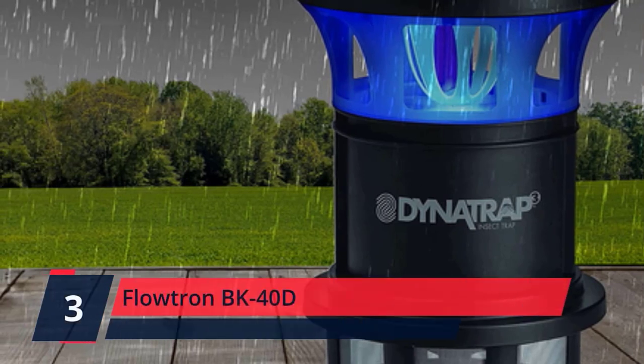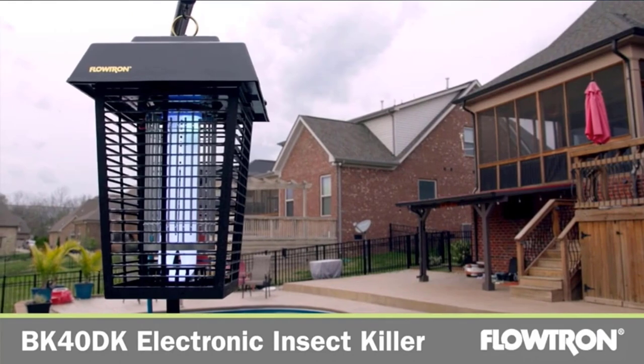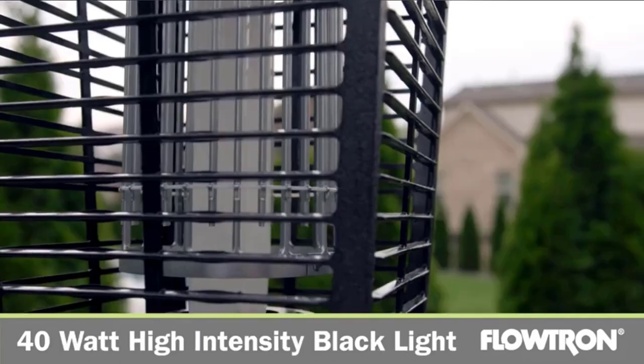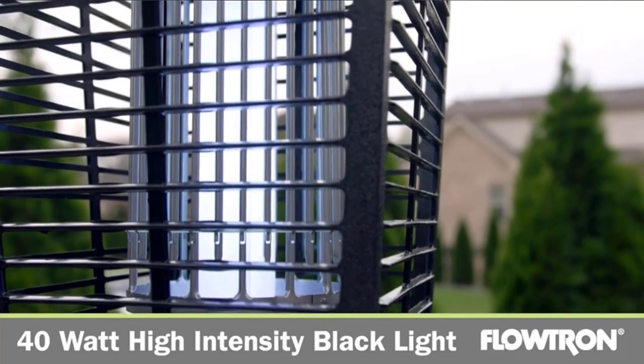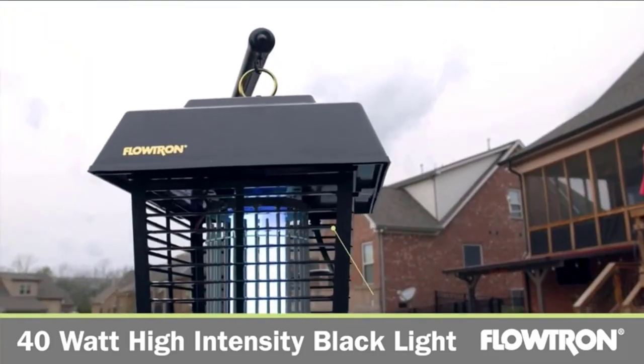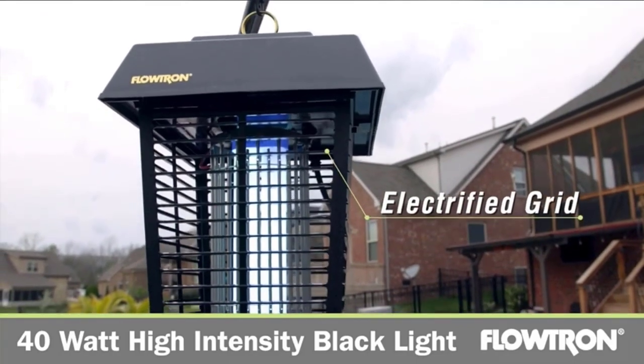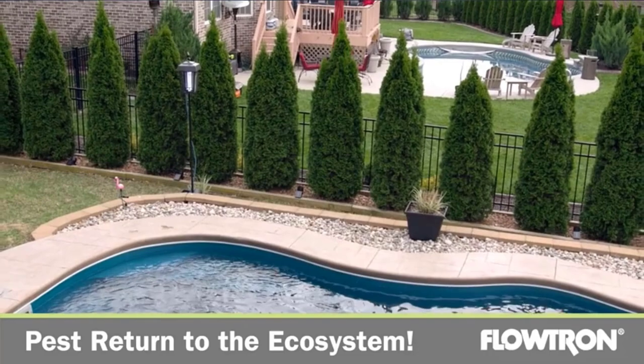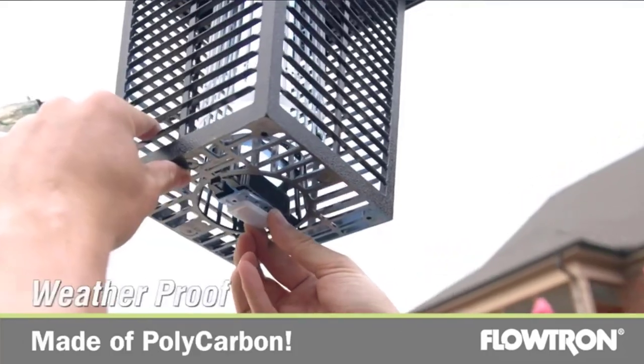Number 3. Flowtron BK40D. Rid your outdoor living areas of flying insect pests without harming the environment. Insect remains, uncontaminated by pesticides, fall to the ground to be naturally reabsorbed into the ecosystem. Maintenance-free operation features UV light and an electrified grid that eliminates thousands of flying pests for just pennies a day. Check the description for details and prices.